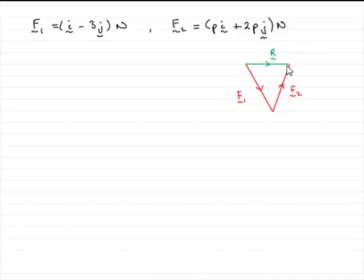We're also told that the resultant is parallel to the vector i, so it's going to be like this in the direction of i. And we've got to find out the value of p.